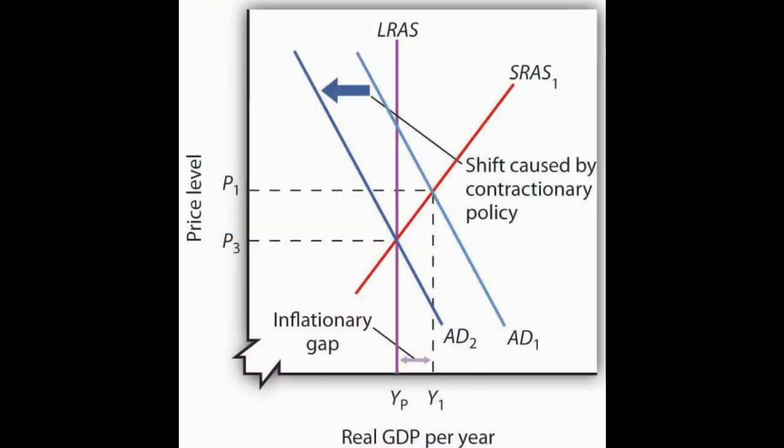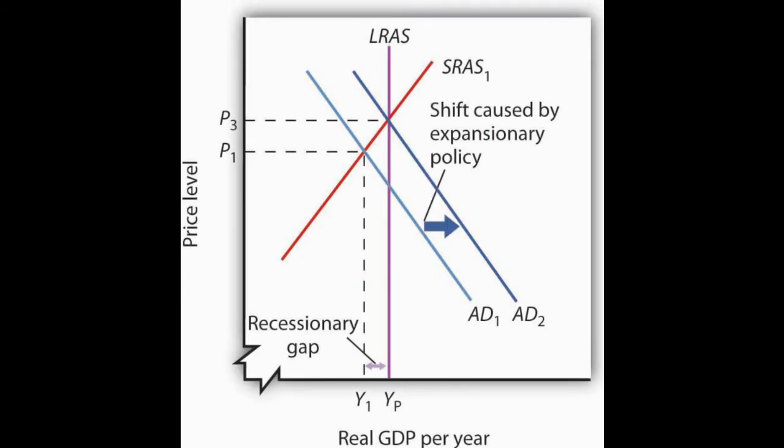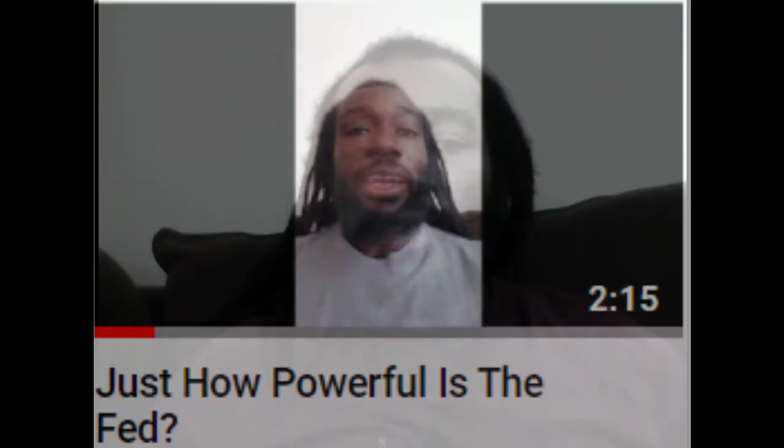Contractionary policies are designed to cool down the economy and might include reducing government spending and transfer payments in the case of contractionary fiscal policy, or raising interest rates as a contractionary monetary policy. Expansionary policies are designed to stimulate the economy and may include increasing government transfer payments or purchases, or cutting interest rates, as fiscal and monetary policies, respectively. There are two avenues that the government can use to intervene against output gaps and influence the macroeconomy.